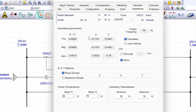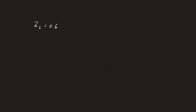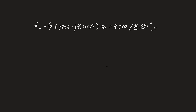We need to calculate the reaches in terms of the positive sequence impedance. Going to the notebook, Z1 — the positive sequence impedance — is 0.69806 + j4.21257 ohms. Converting to polar form, that equals 4.270 at an angle of 80.591 degrees, in primary ohms.